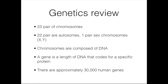For a quick genetics review: we have 23 pairs of chromosomes — 22 pairs are autosomes and one pair are sex chromosomes, the XY chromosomes. Chromosomes are composed of DNA, and a gene is a length of DNA that codes for a specific protein. There are approximately 30,000 human genes. We will primarily discuss chromosomal abnormalities today, but it is important to remember there are almost infinite variations that can occur in genes and DNA beyond chromosomal abnormalities.